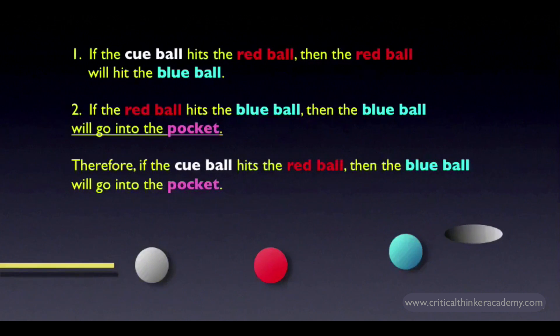This argument form is often used to represent chains of cause and effect, like in this example. If we assume that hitting the cue ball will cause the red ball to hit the blue ball in a certain way, and if the red ball hitting the blue ball this way causes the blue ball to go into the pocket, then we can say that if we hit the cue ball in this certain way, the blue ball will go into the pocket. This is precisely the kind of reasoning that a pool player is doing when they're setting up a combination shot like this.